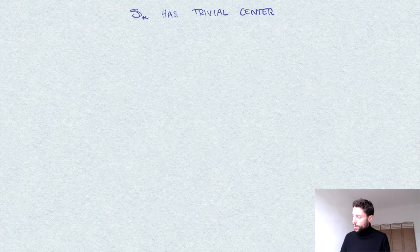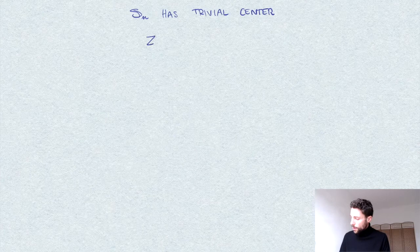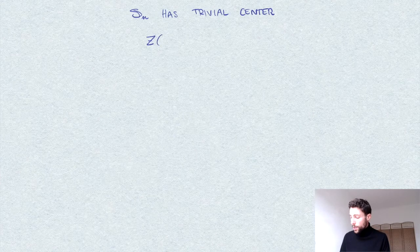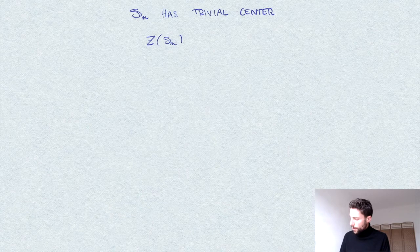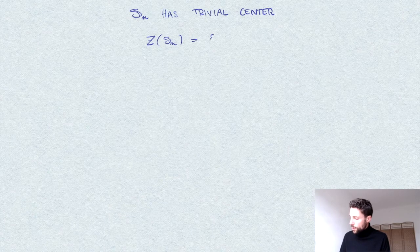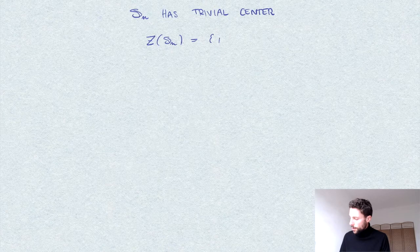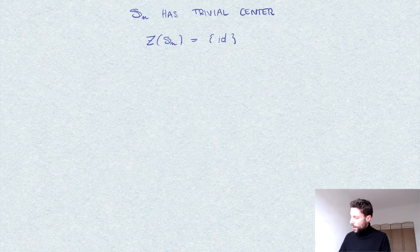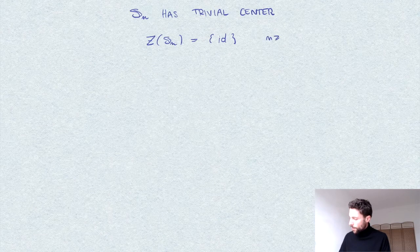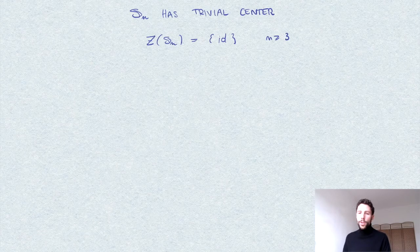So in symbols we would write Z, usually the center is denoted by Z, of Sn is reduced to the identity. There are no other permutations, at least for n greater or equal to 3.